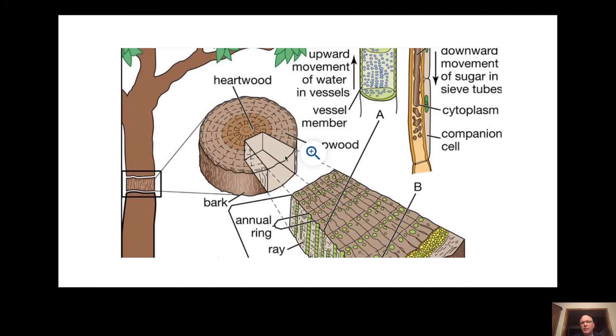The phloem sends sap up and down because the whole point of a tree is to produce sugar sap. It deposits that sap in the roots during the winter time, and in the spring that sap flows up to give energy to make the new leaves in the springtime.